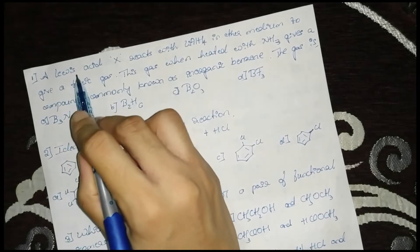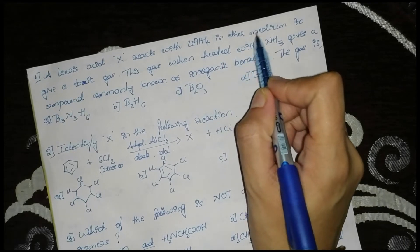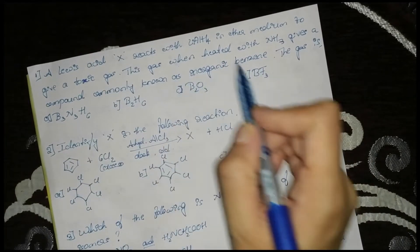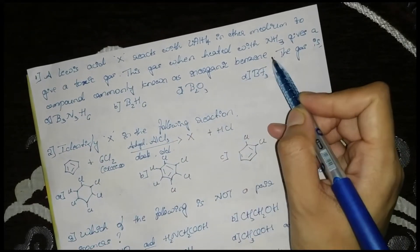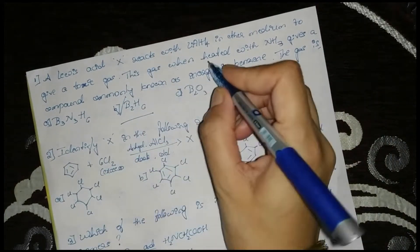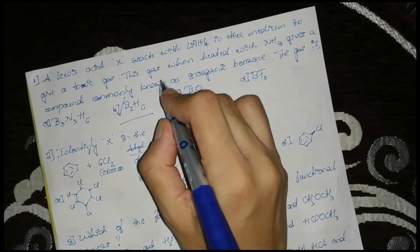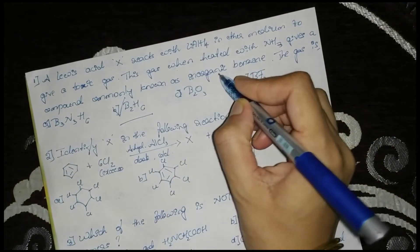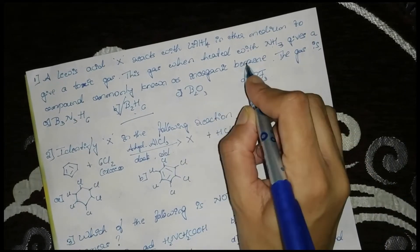First question: A Lewis acid X reacts with lithium aluminium hydride in ether medium to give a toxic gas. This gas when heated with NH3 gives a compound commonly known as inorganic benzene. The answer is B2H6.